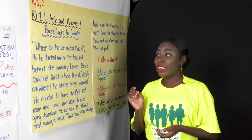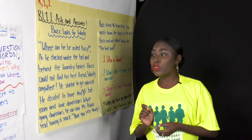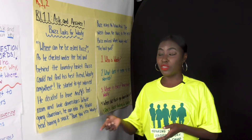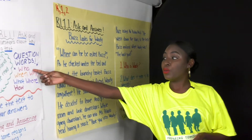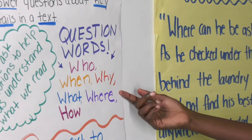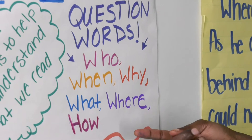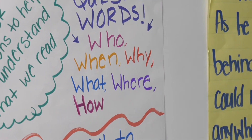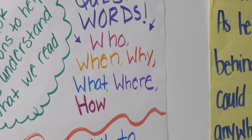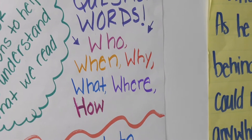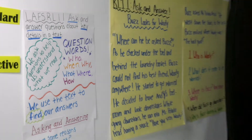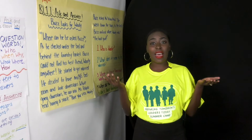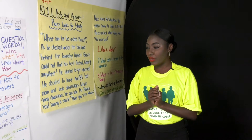When we're asking and answering questions, we always want to think about these key words as stated yesterday: who, when, why, what, where, and how. We ask these questions to help us understand what we read, and we use the text to help us find our answers.